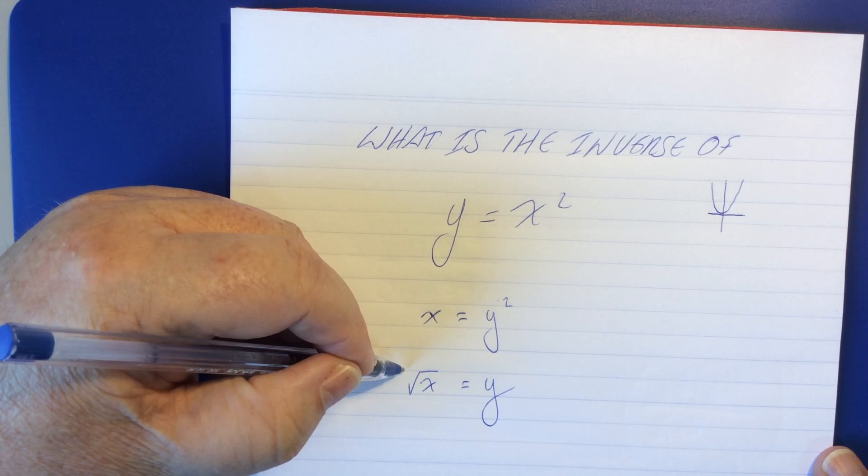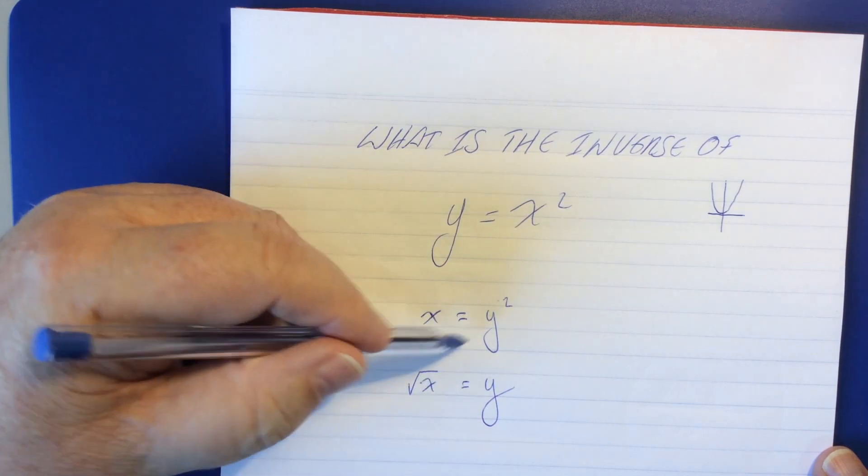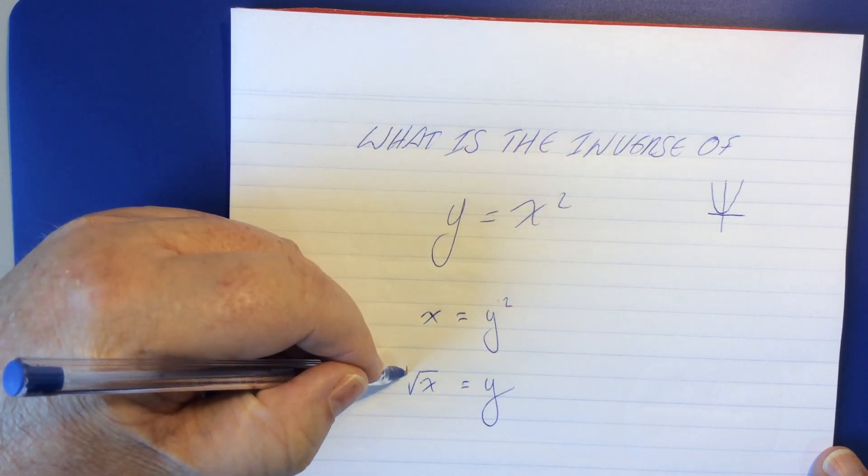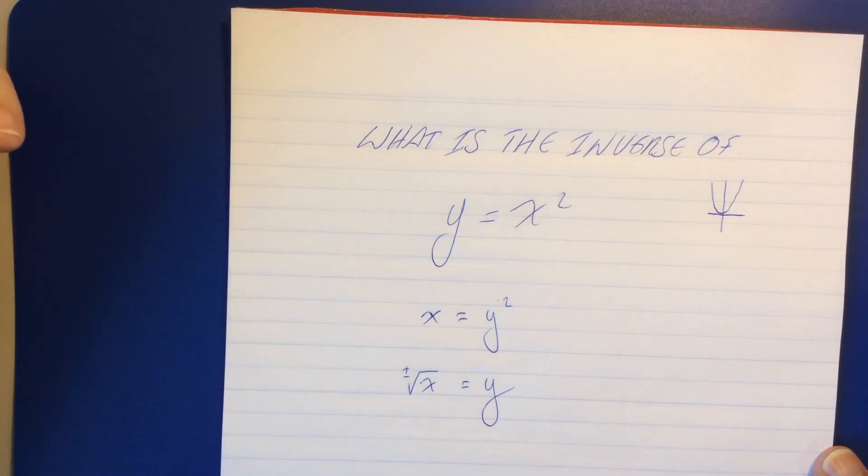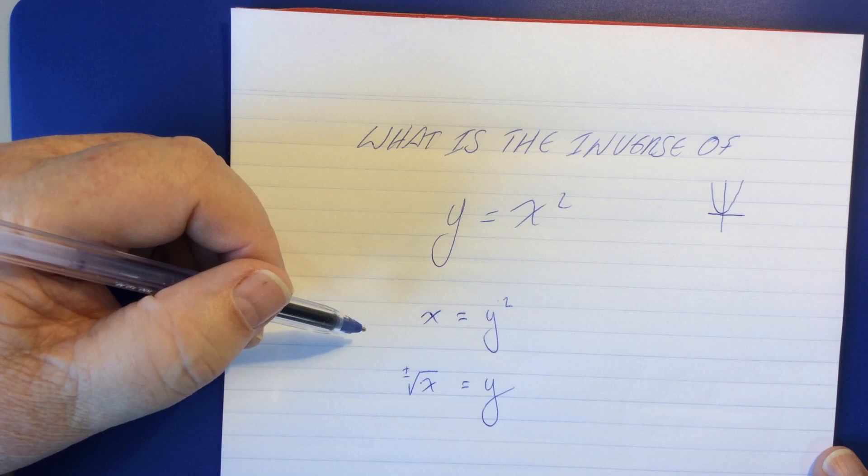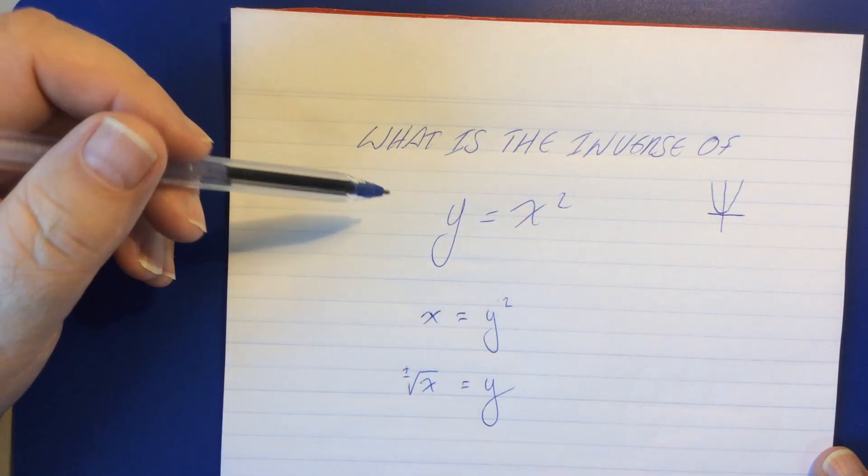Now, when I was at school in the Stone Age, we just accepted that when we did this, that this was positive and negative root x. But I'll just put that there for the sake of not confusing anyone.